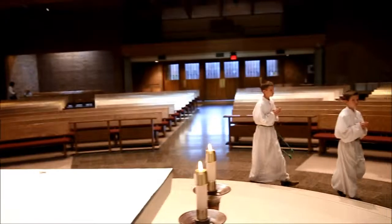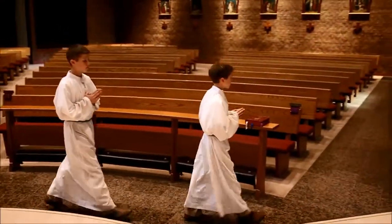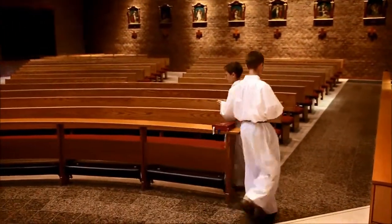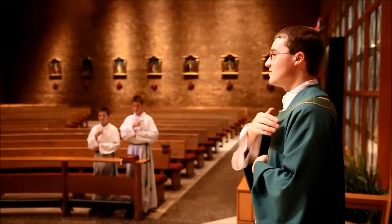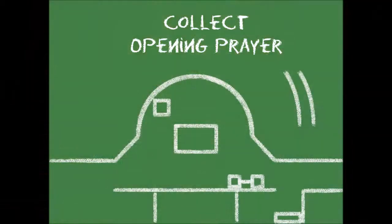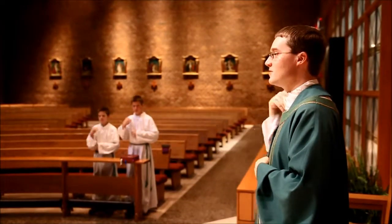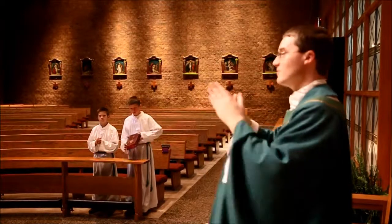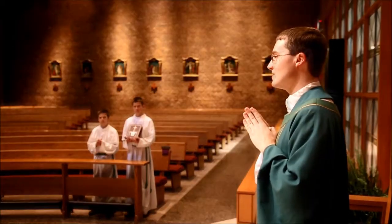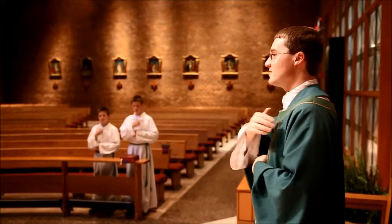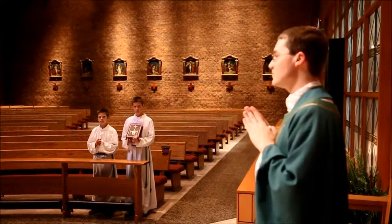Then the servers move to their seats in the first pew on the left side of the sanctuary. Server A should enter the pew first, so that Server B can be on the outside for the opening prayer. Mass begins with the sign of the cross, the greeting by the priest, and the penitential act. The servers should follow along as they normally would at Mass. After making the sign of the cross, Server B should pick up the Roman Missal.